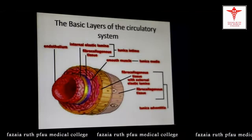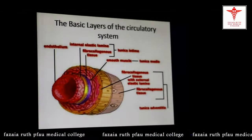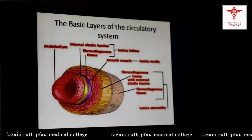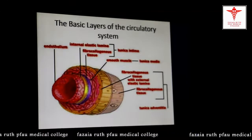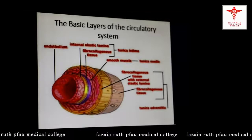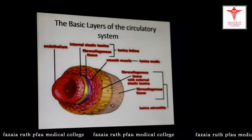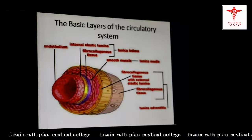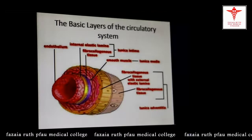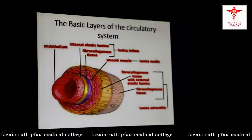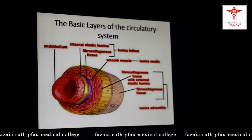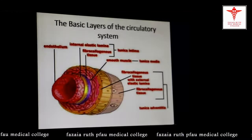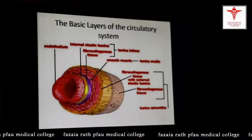As you all know, the circulatory system blood vessels have a basic structure consisting of three layers. This diagrammatic picture shows the three layers of the vessels. From the lumen going from inside to out, the three layers are: number one, tunica intima; then the middle layer, tunica media; and the outermost layer, tunica adventitia.